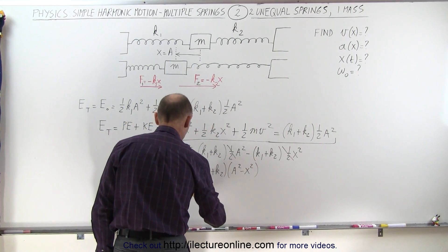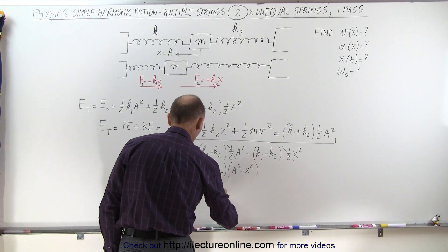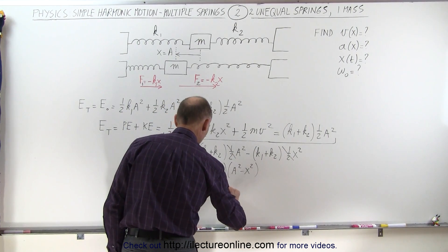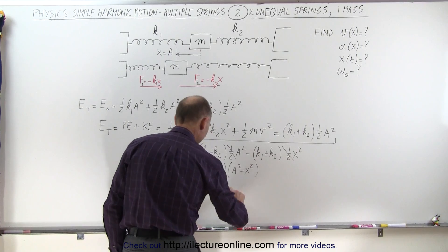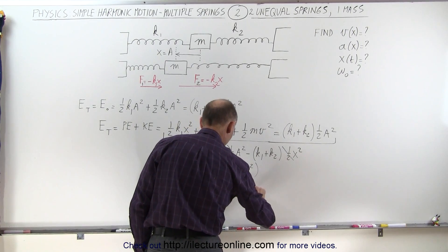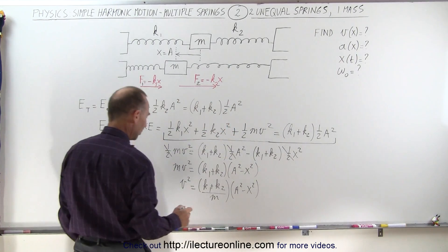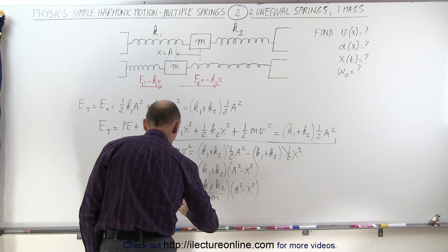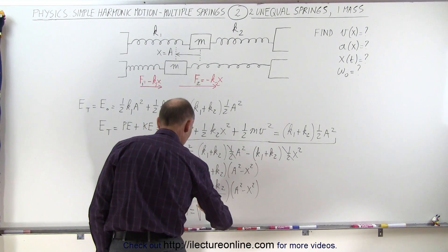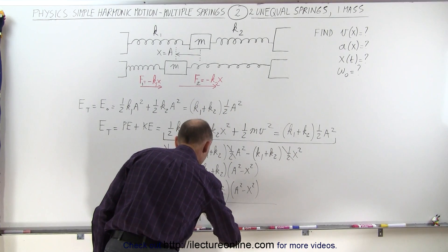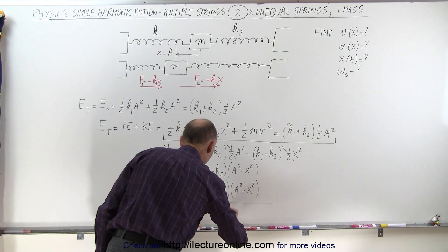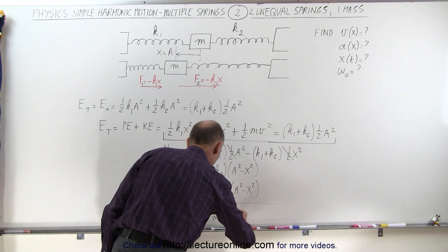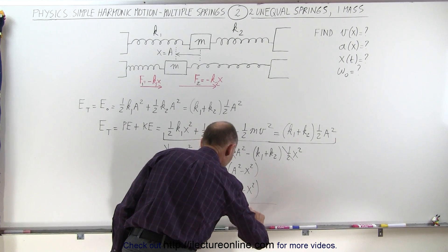We have v squared is equal to k1 plus k2 divided by m times a squared minus x squared. And now when I take the square root of both sides, I get v, which is now a function of x, is equal to the square root of k1 plus k2 over m times a squared minus x squared.